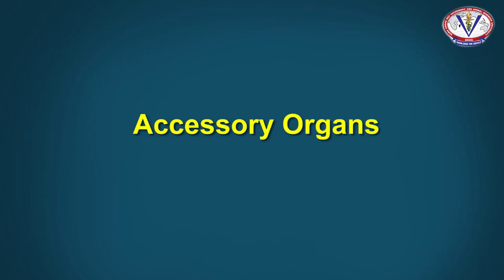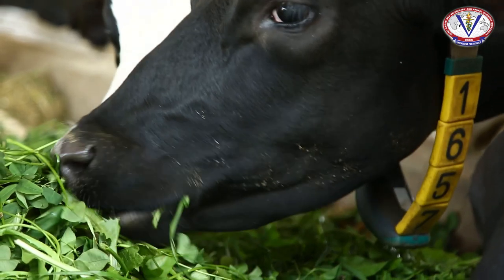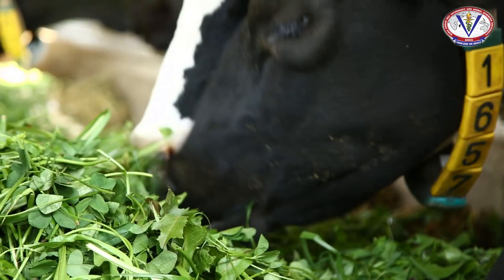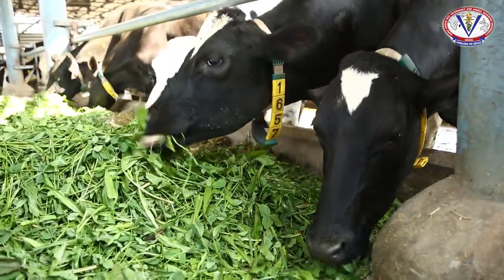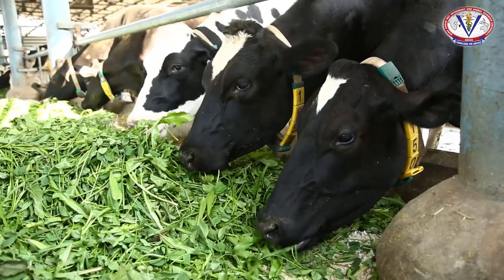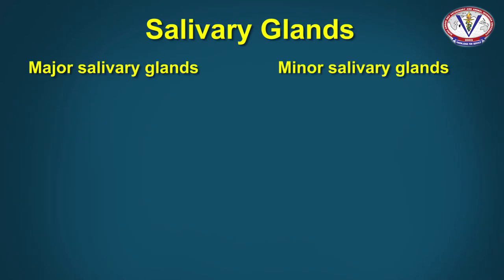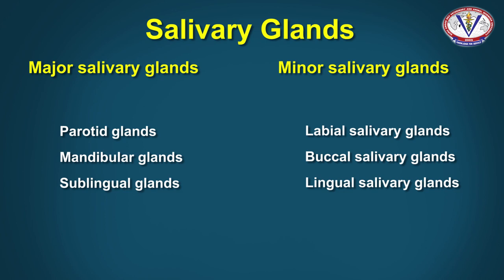The accessory organs of the digestive system include salivary glands, liver, and pancreas. Salivary glands are extramural glands which empty their secretions into the digestive system via ducts. Their secretions keep the mouth moist, facilitate mastication, and help in bolus formation and swallowing. They are classified into major and minor salivary glands. Major salivary glands are the parotid, mandibular, and sublingual salivary glands. Minor salivary glands include the labial, buccal, lingual, and palatine glands.